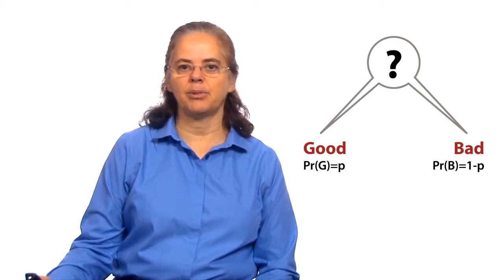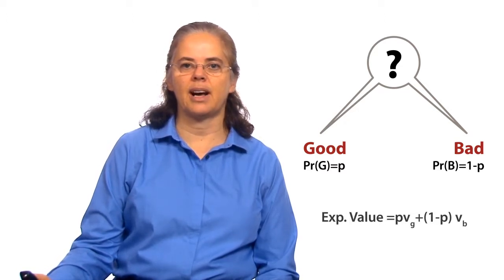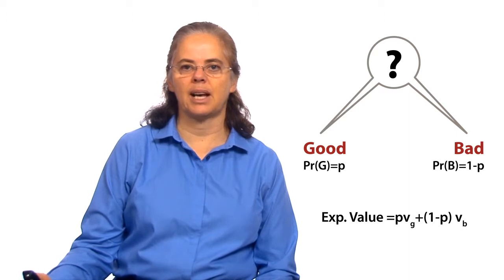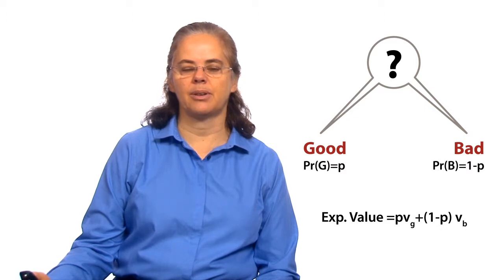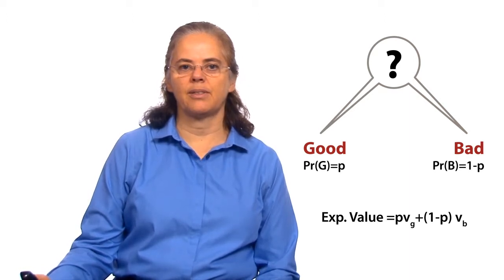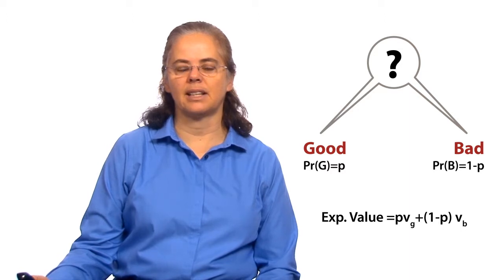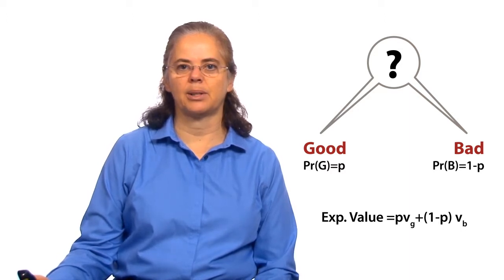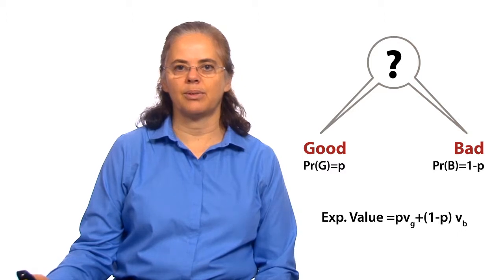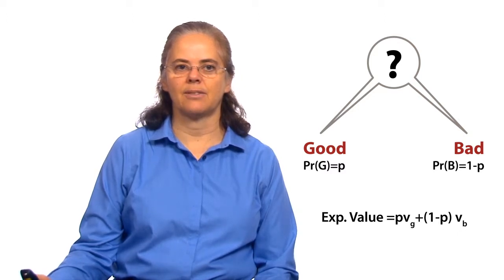In an attempt to think about whether the product is worth buying, it's natural to compute the expected value: p times vg plus 1 minus p times vb. Let's assume this expected value is 0. So really, you're undecided whether it's a good or bad idea to buy the product, given you don't know whether it's going to have a positive or negative value.